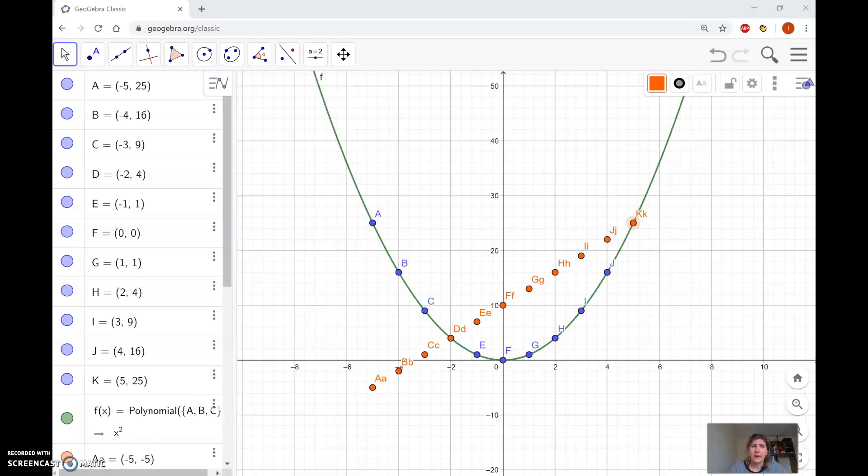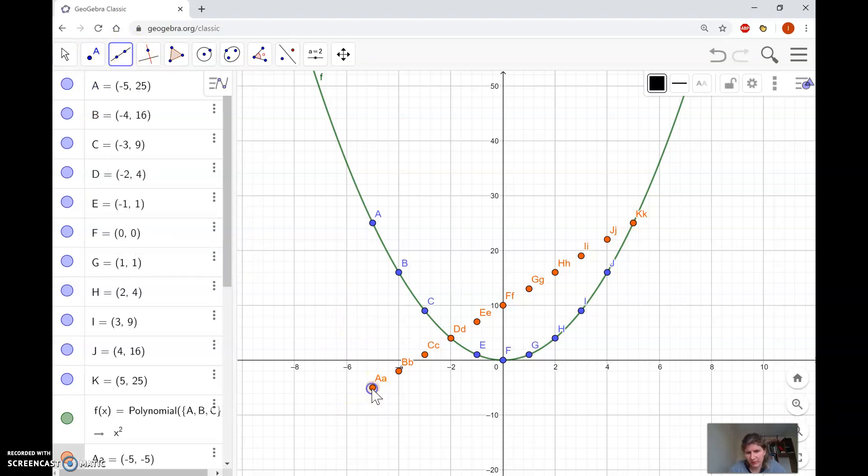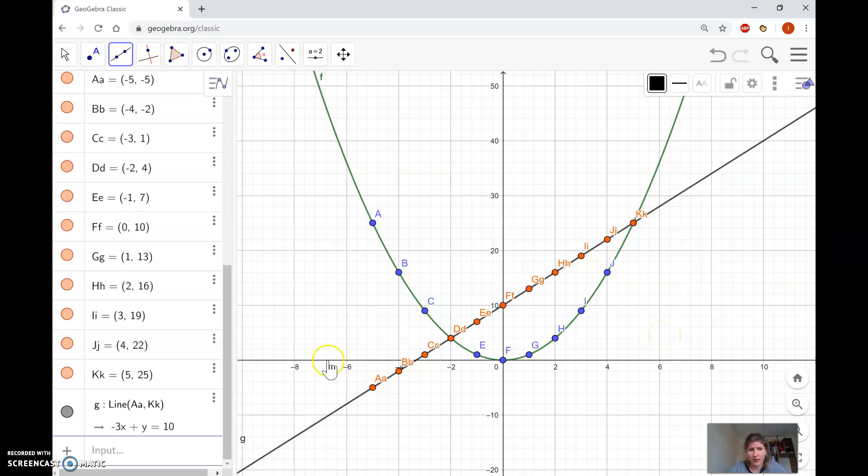Those are all the points. That took about a minute, which is probably less time than doing it by hand. Now we're going to add a line. You'll see at the top it says line. Select two points—I'm going to select the first point and the last one—and that creates our straight line.